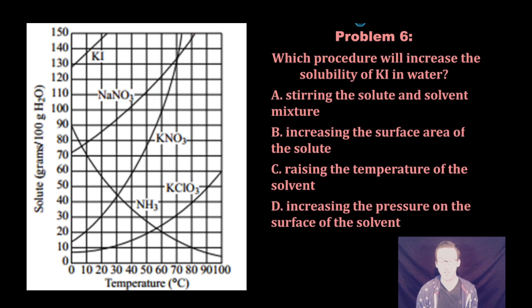And this brings us to problem number six. It says, which procedure will increase the solubility of potassium iodide in water? Now this question is a little bit deceptive because it's asking you to think about which would increase solubility. Stirring the solute and solvent mixture would increase the rate at which you've got things to dissolve, as would increasing the surface area. But that's just going to speed up the process of dissolving, not increase the amount that you can dissolve.